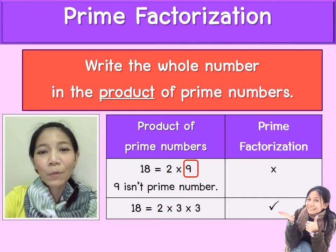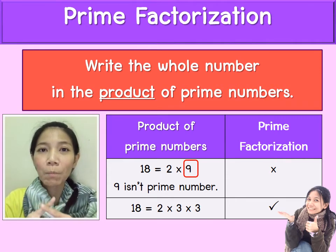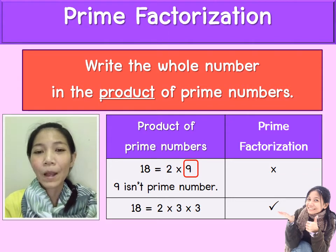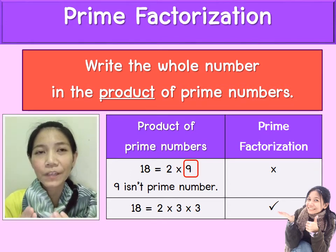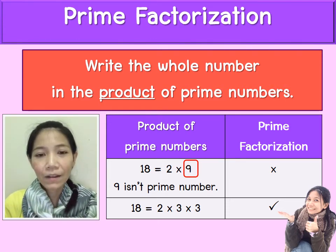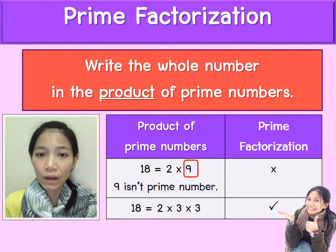You write the whole number as the product of prime numbers — you bring prime numbers to multiply. For example, 18: what numbers can multiply to equal 18? 2 times 9, yes — but 2 times 9 is not prime factorization because 9 is not a prime number.